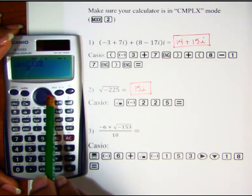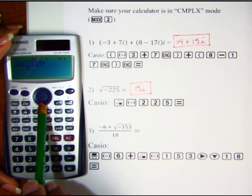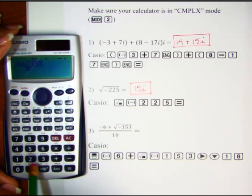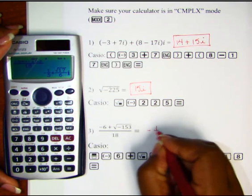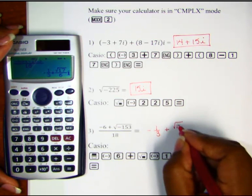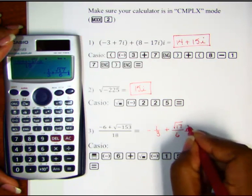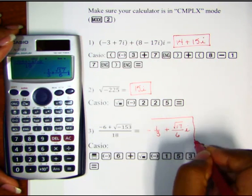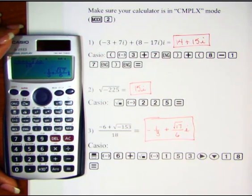Let's move from under the radical sign, then drop down to the denominator and enter 18. We'll hit equals and we get negative one-third plus the square root of 17 over 6i, and that is exactly how it is displayed on the screen.